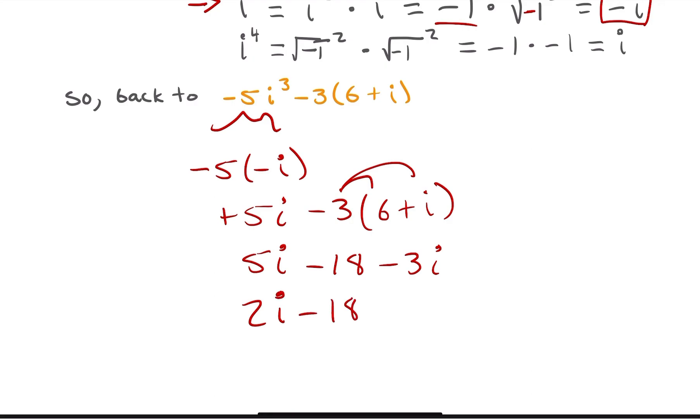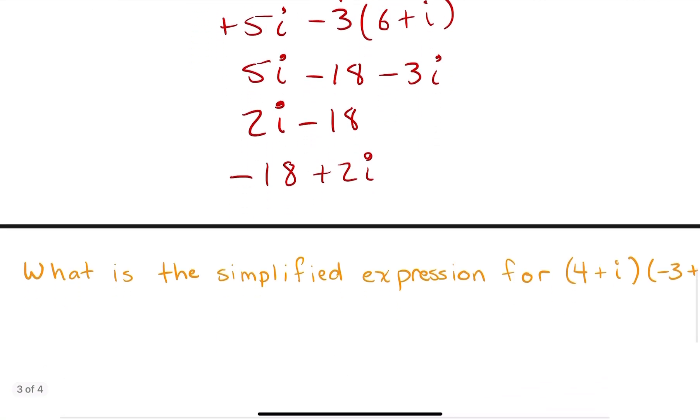Sometimes 5i minus 3i should just give me 2i. There's nothing to combine 18 with. And if I just kind of rearrange this a little bit, I finally have the complex number negative 18 plus 2i. So hopefully you kind of followed the algebra that I did there. Let's go ahead and move on to another problem.